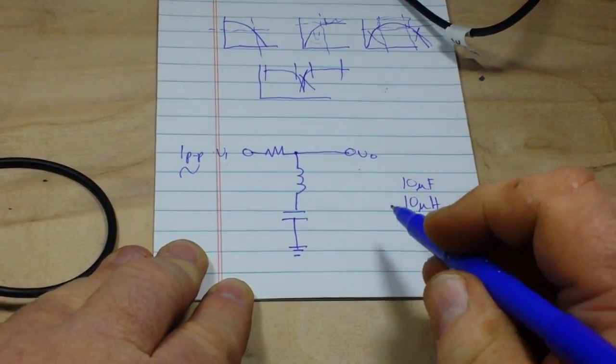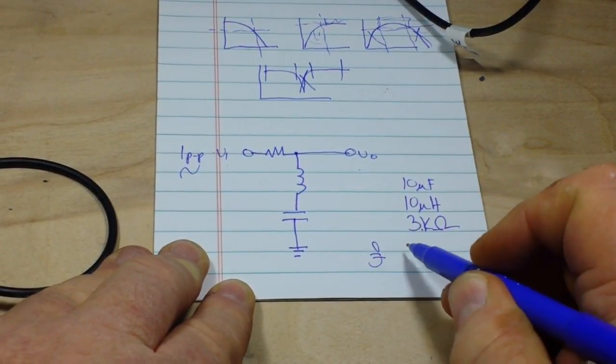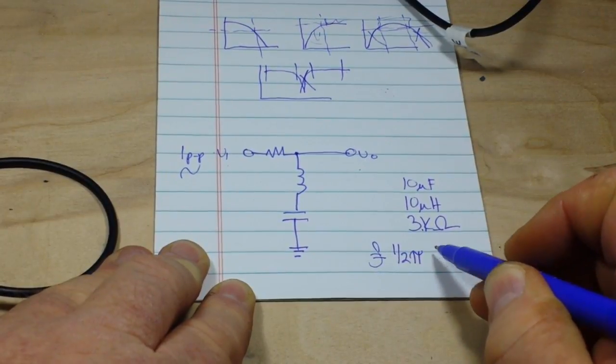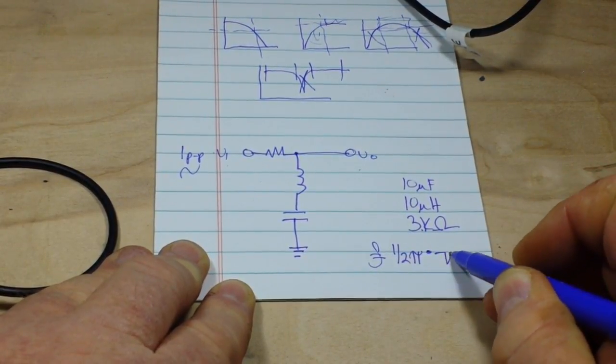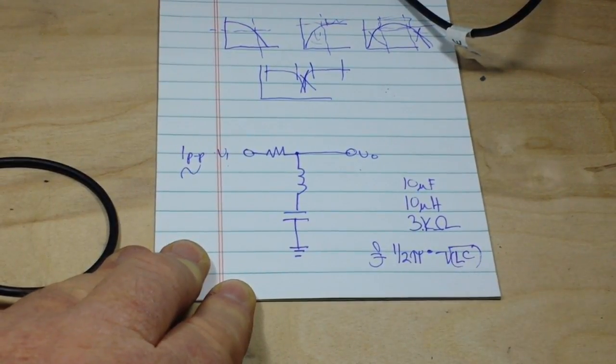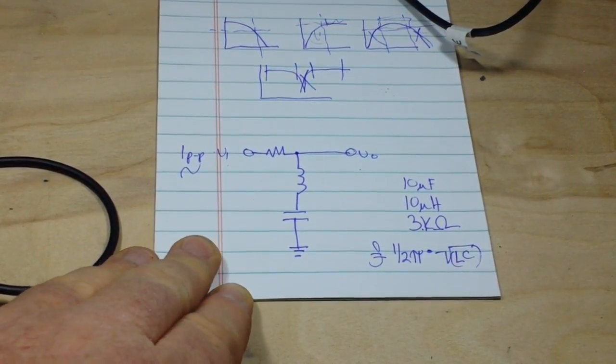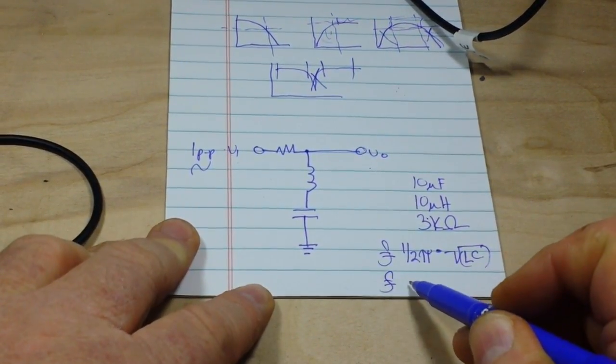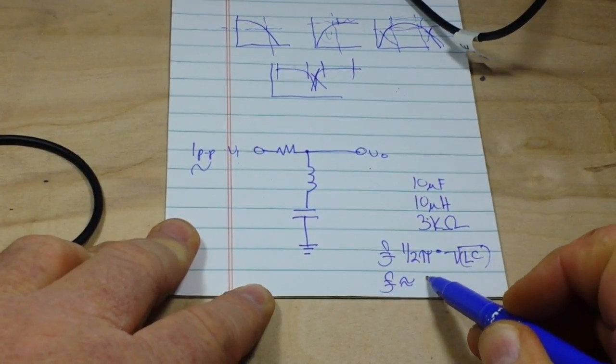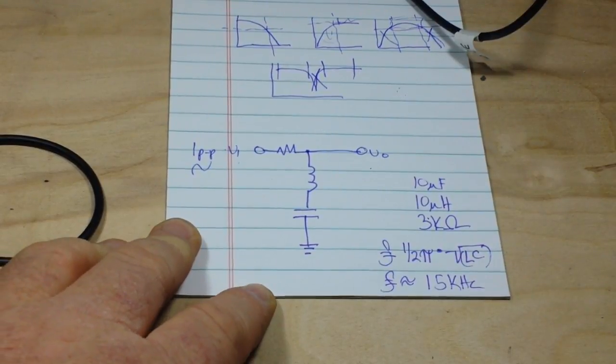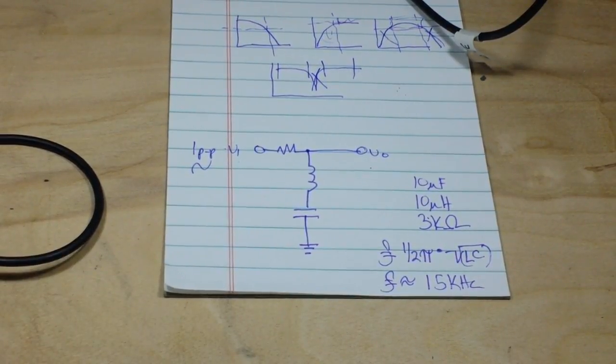And our formula for finding our cutoff frequency is 1 over 2 pi times the square root of L times C. And if we put all that together, our cutoff frequency is going to be about 15 kHz. So let's bring in our filter and have a look.